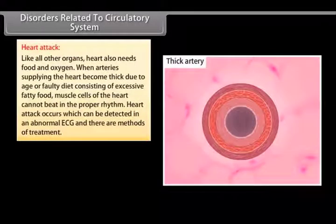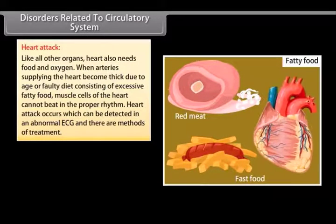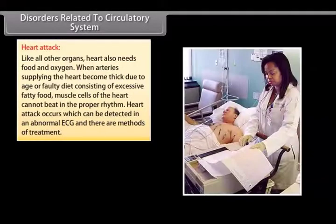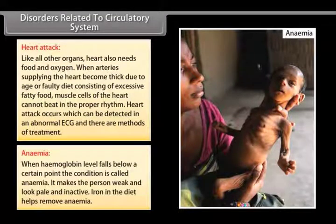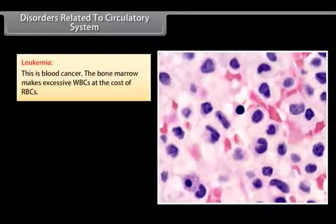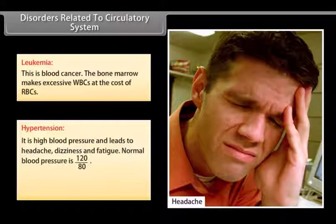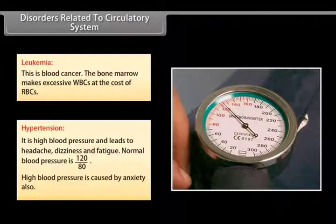Disorders related to the circulatory system include: Heart attack — like all organs, the heart needs food and oxygen. When arteries supplying the heart become thick due to age or a diet of excessive fatty food, the heart muscle cells cannot beat in the proper rhythm, resulting in a heart attack detectable by an abnormal ECG. Anemia — when hemoglobin levels fall below a certain point, the person becomes weak, pale and inactive; iron in the diet helps. Leukemia — blood cancer in which the bone marrow makes excessive WBCs at the cost of RBCs. Hypertension — high blood pressure causing headache, dizziness and fatigue; normal blood pressure is 120/80 and it can also be caused by anxiety.